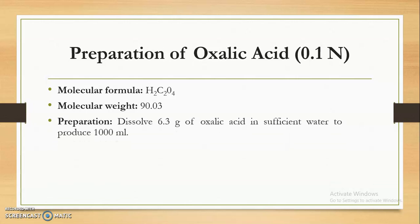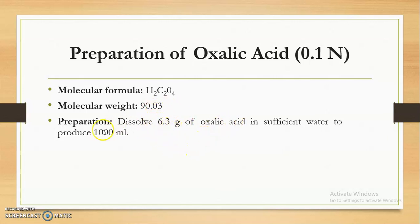How to carry out the preparation of the oxalic acid? If we want to prepare 0.1 normal oxalic acid, we have to dissolve 6.3 grams of oxalic acid in sufficient water to produce 1000 ml. So if we take 6.3 grams of oxalic acid, that will correspond to the 0.1 normal solution of oxalic acid. Always we have to prepare the volumetric solution in a volumetric flask. We have to take sufficient quantity of water, add 6.3 grams of oxalic acid, and make up the volume to 1000 ml.